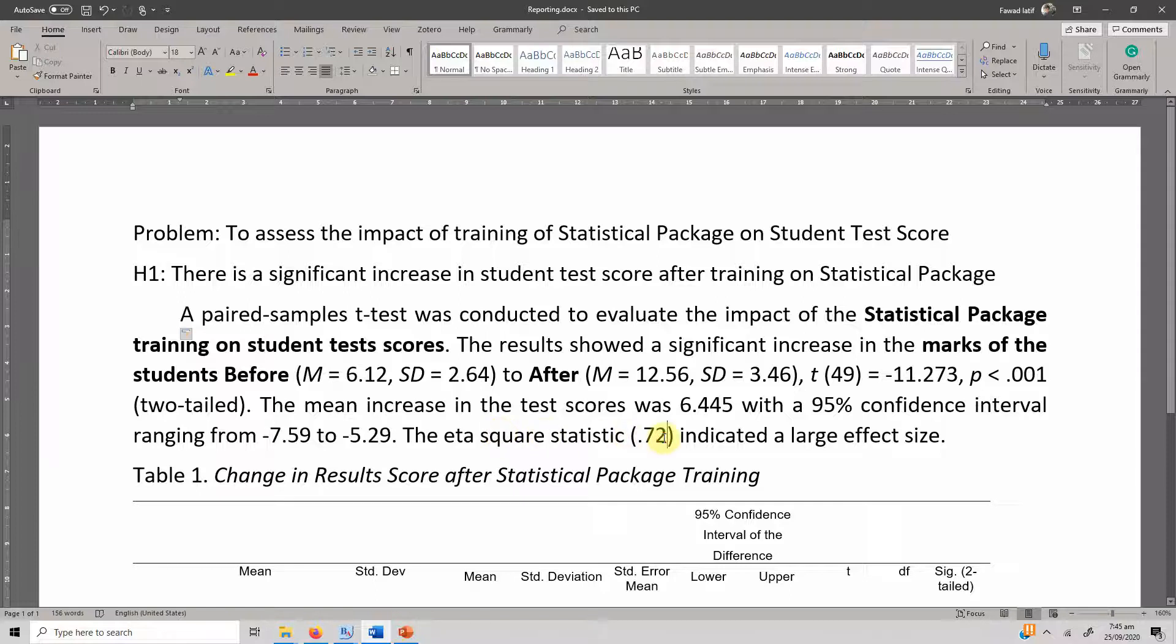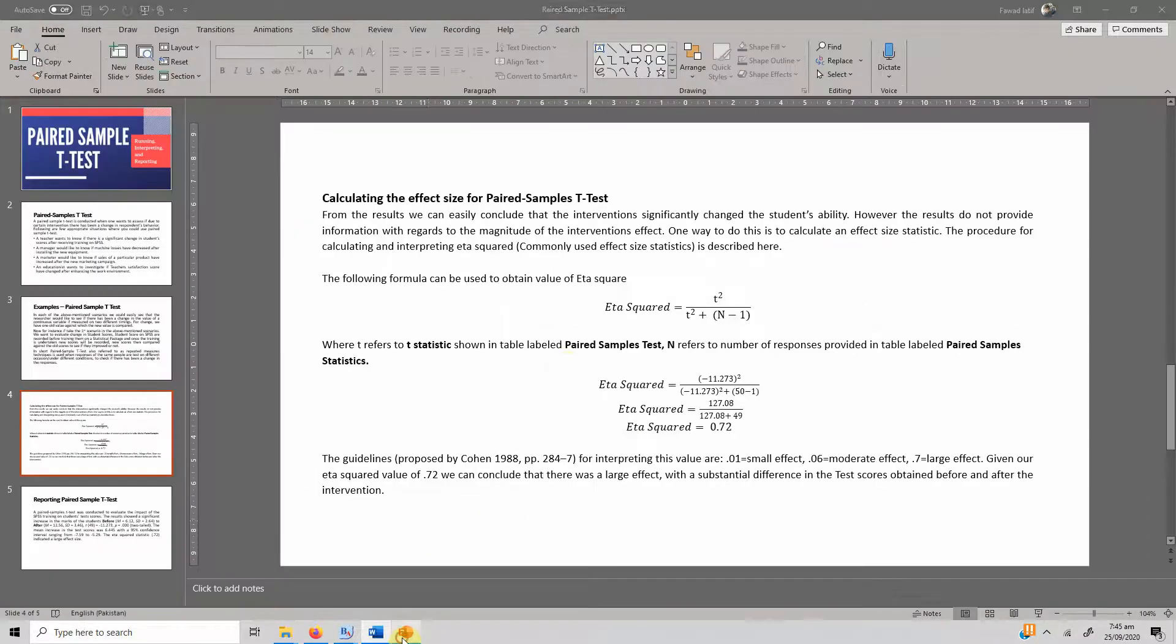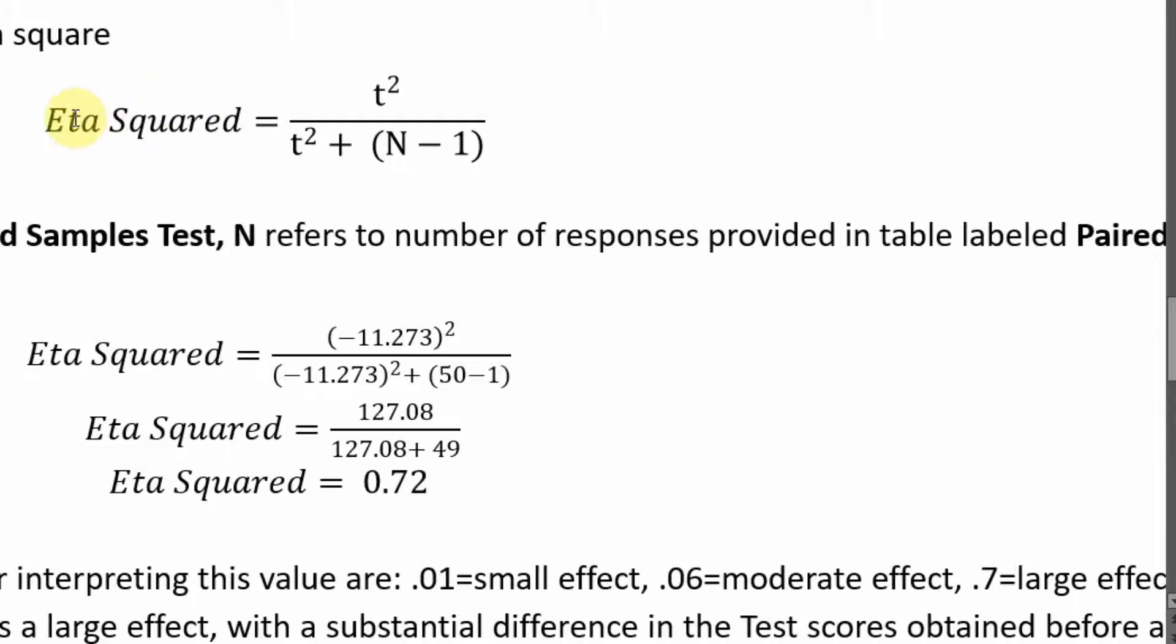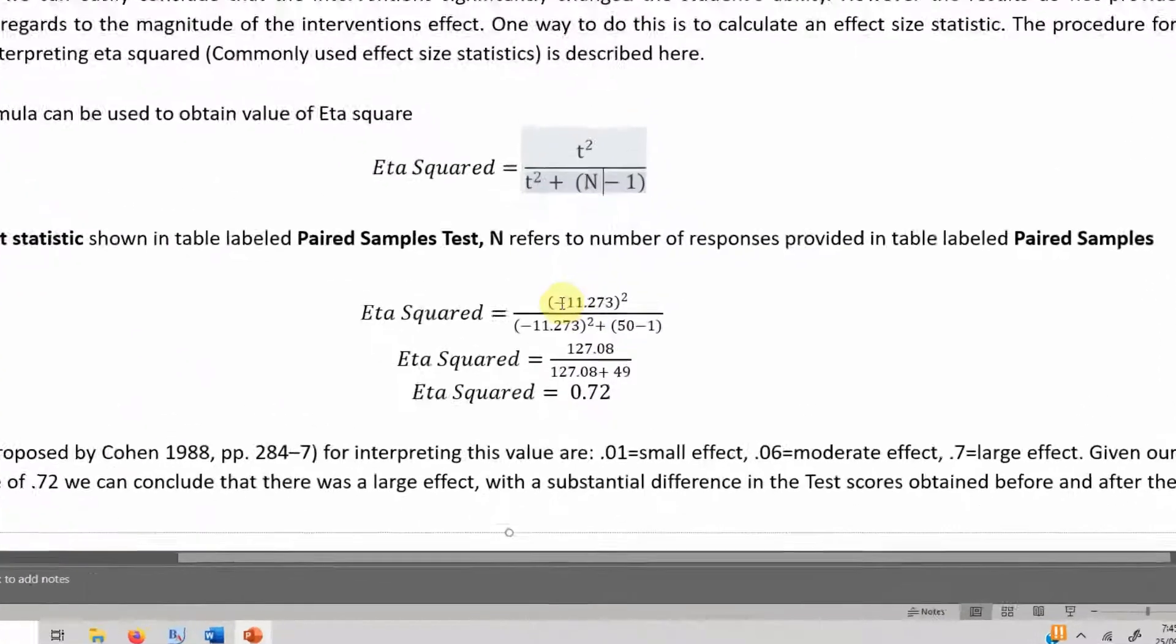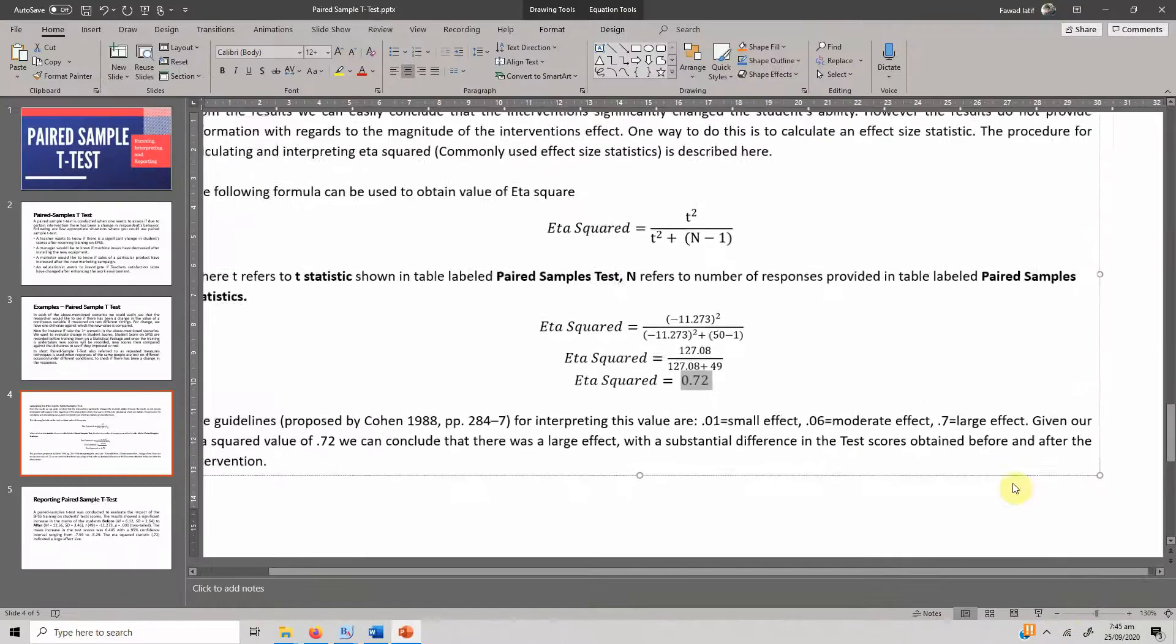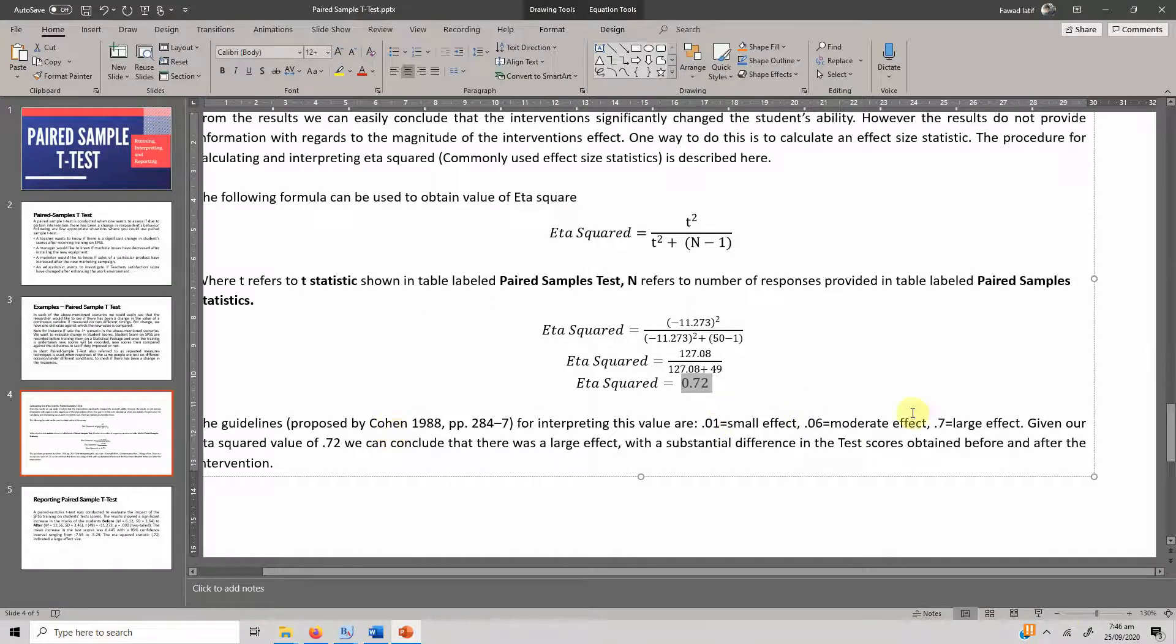The eta squared, so this is your effect size. How do you calculate effect size? This is the formula for your eta squared. This is your effect size. Your t-squared plus n minus 1, so your degrees of freedom. Just add these values in here to the formula. This is your t-value, so square of it would obviously change it to positive value, and just calculate. So what you will get is 0.72. So what does this 0.72 mean? According to Cohen 1988, this would mean the intervention had a large effect. In this case, your training intervention had a large effect in changing the student's scores, and this is how you report it.